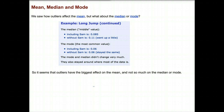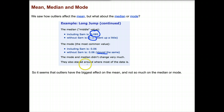We saw how outliers affected the mean, but what about the median or mode? If we include Sam, our median is 0.085. If we take Sam out, our median is 0.11 — it went up a little bit, but very insignificantly. That's more a factor of the new middle value being in a different location because we took a value out. The mode, on the other hand, has not changed — it stayed at 0.06 in both cases. So the mode and the median didn't change very much. Outliers have the biggest effect on the mean, not the median or the mode.